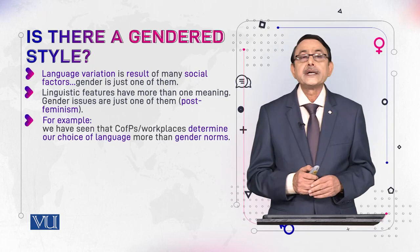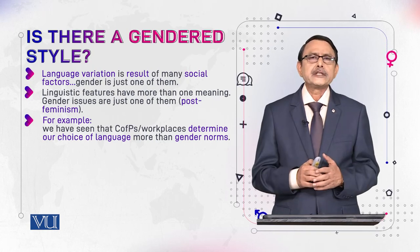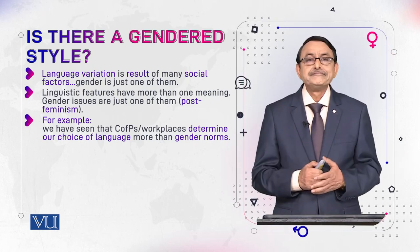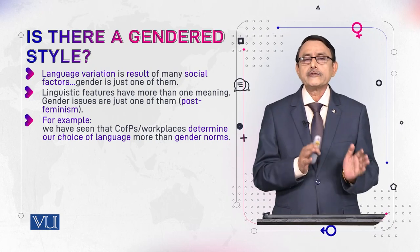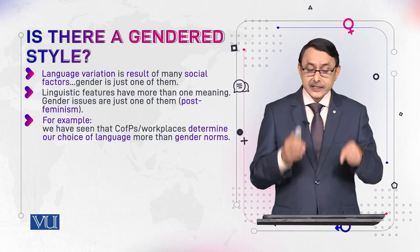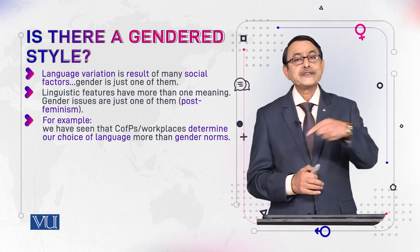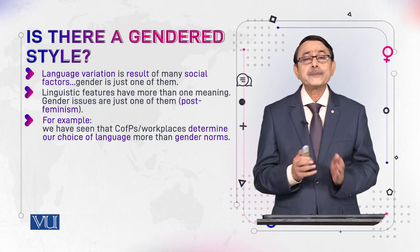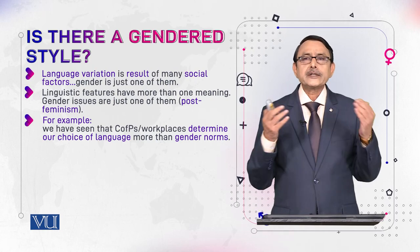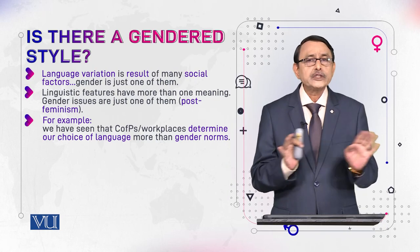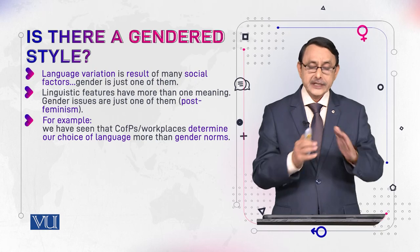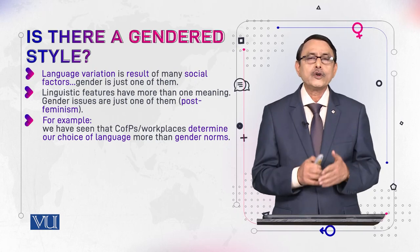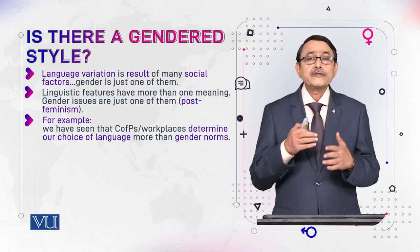For example, we have seen that community of practice — workplaces are one type of community of practice. We have seen in our discussion about community of practice and workplaces that they determine our choice of language more than gender norms. You are working in a bank, you are working in an office — this workplace has its own norms. Whether you are male or female, your sex won't determine your use of language in such circumstances. The norms of that institute, that workplace, would tell you how you talk, how you write, what kind of linguistic behaviour you will adopt.